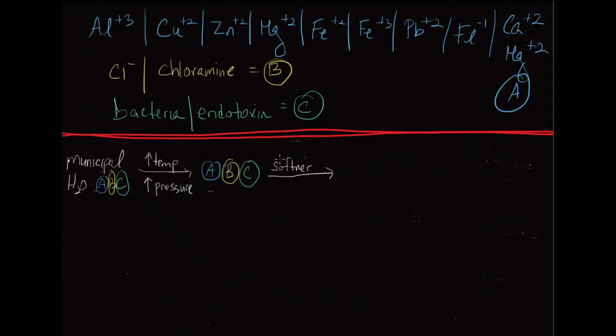You're going to end up with water that still has all of these other cations and anions in it, but it doesn't have calcium and magnesium, so we're going to now describe that as small letter A. You still have chlorine and chloramine, that's big B. And you still have your bacteria and endotoxin that could develop at any time, big C. So what you've really eliminated is just the calcium and magnesium. We'll call this step two.